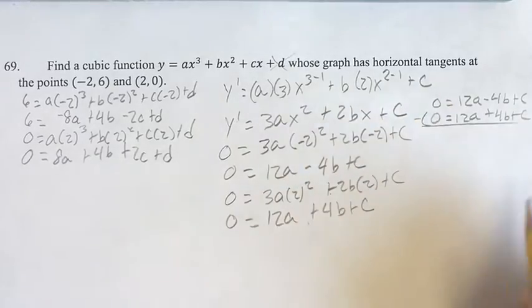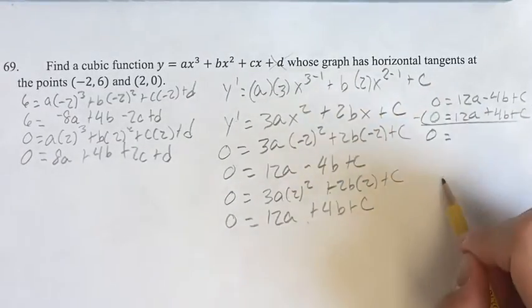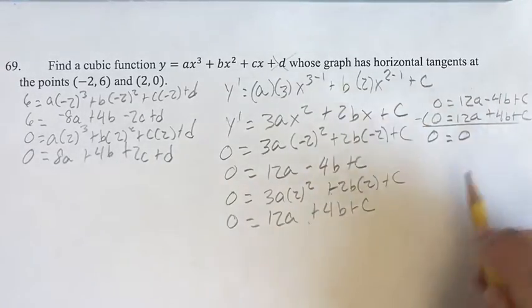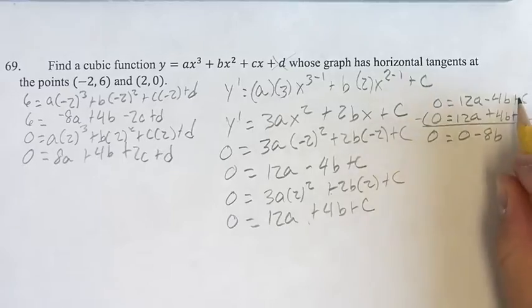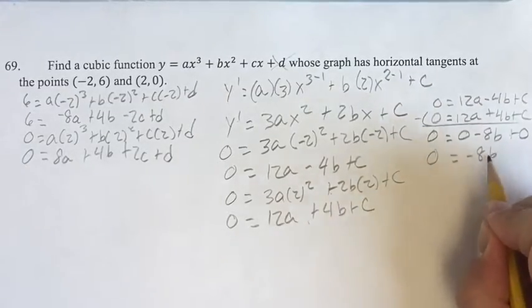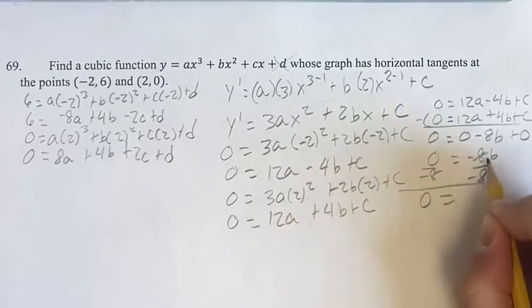We do elimination and we subtract these. We get 0 minus 0 is 0, equals 12a minus 12a is 0, negative 4b minus 4b is minus 8b, and then c minus c is 0. Therefore, 0 equals negative 8b, dividing by negative 8, we get 0 equals b.